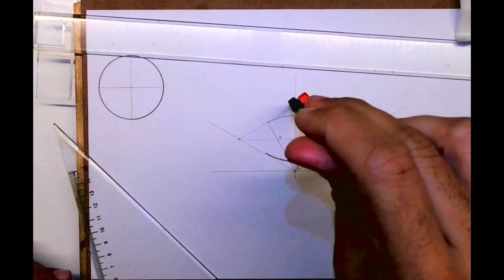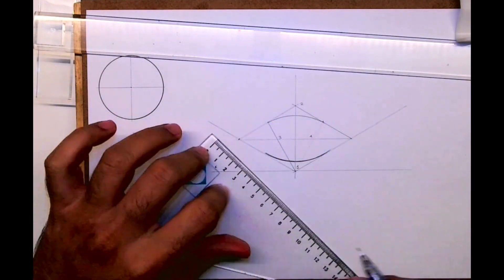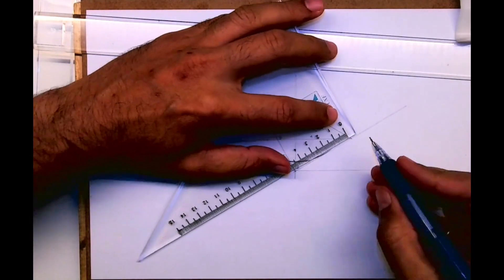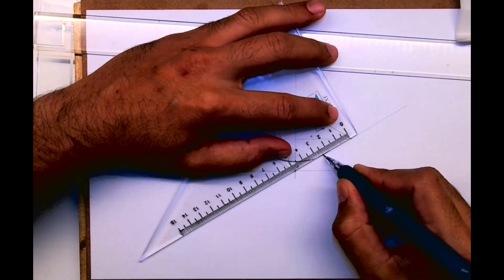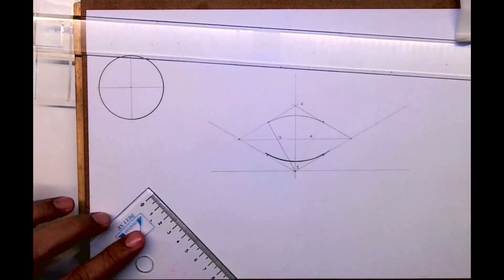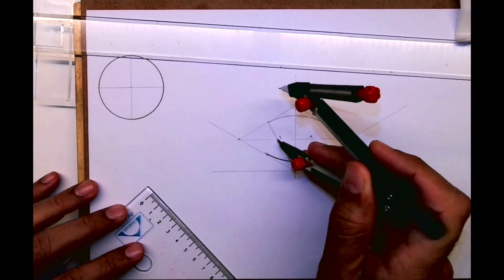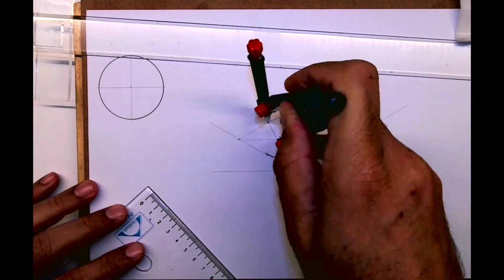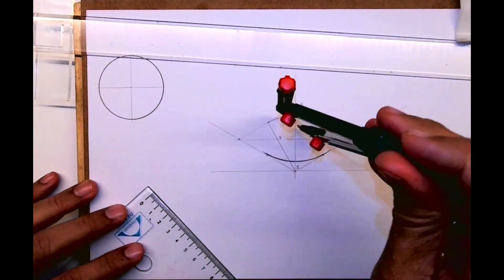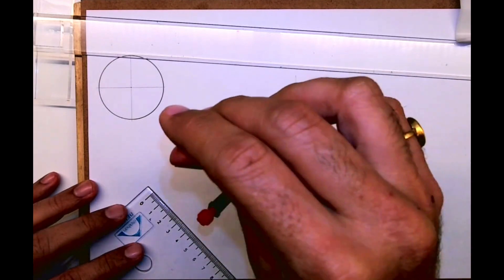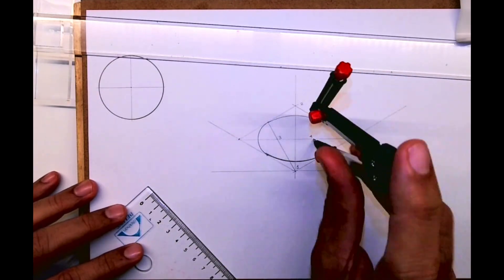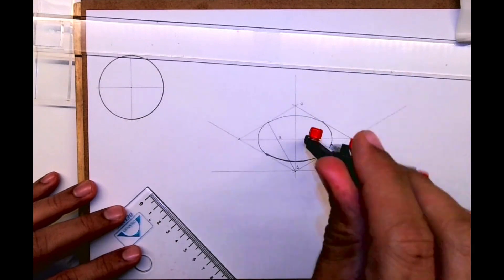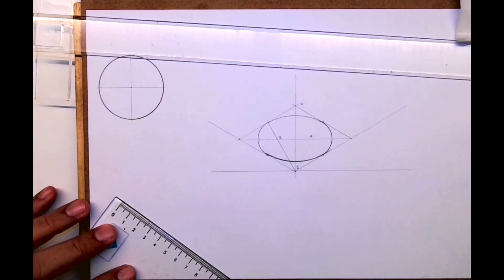See, like this, then from three. I'm just marking the midpoint. Then from three we are drawing curve, and from four. So this is four center method. This is what most of the people are aware about.